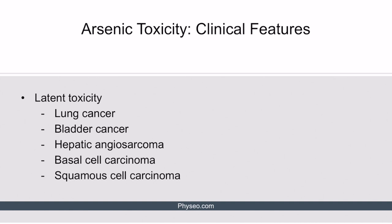Latent arsenic toxicity is defined as toxicity that happens after exposure to arsenic has already stopped. Under this category, it's important to know the various cancers associated with arsenic exposure: lung cancer, bladder cancer, hepatic angiosarcoma, basal cell carcinoma, and squamous cell carcinoma, particularly in the palmoplantar distribution.